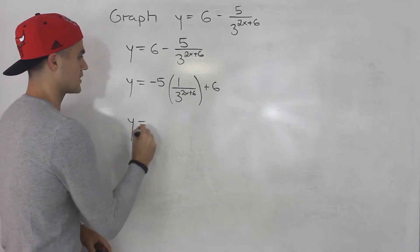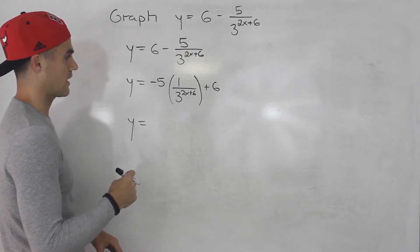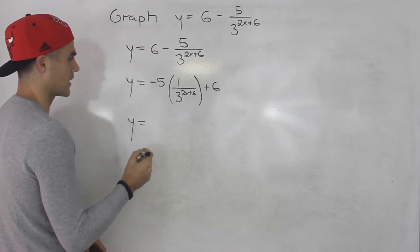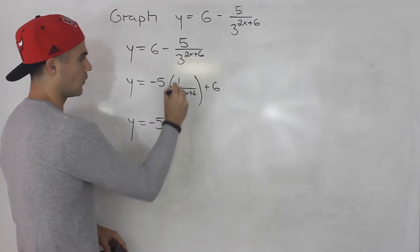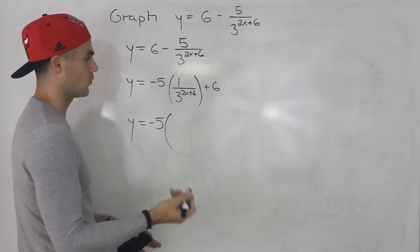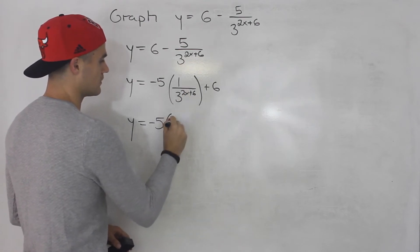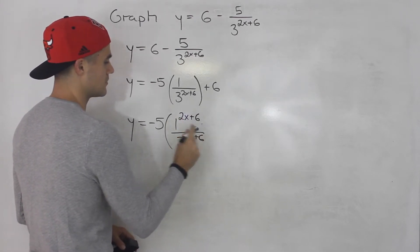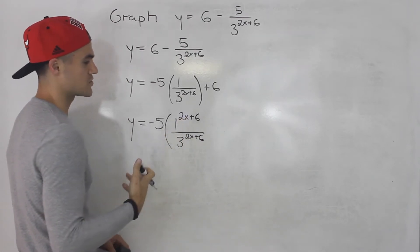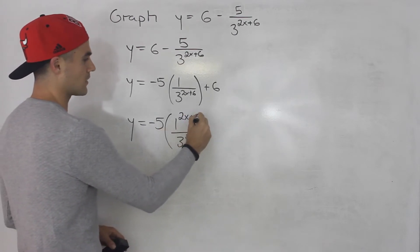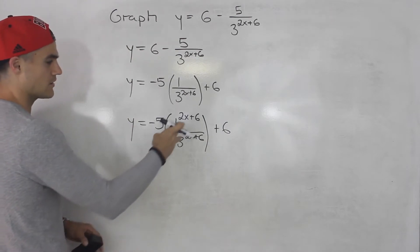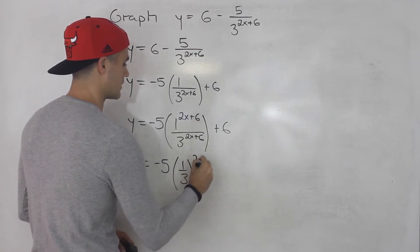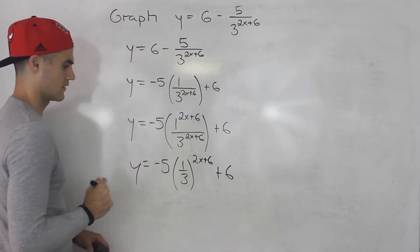Now it's getting closer to an exponential function, but the exponent is still only in the denominator. Since 1 to the power of anything is always 1, we can place the same exponent 2x plus 6 in the numerator as well — giving us 1 to the power of 2x plus 6, over 3 to the power of 2x plus 6 — and then take that exponent outside the bracket.